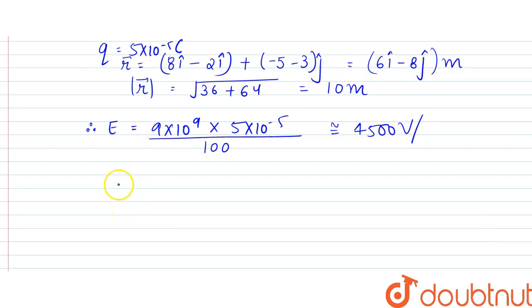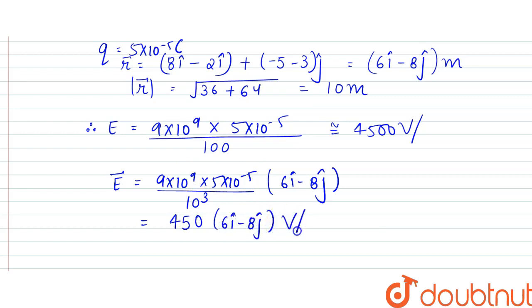But this is the magnitude. The vector, it would be 9 into 10 to the power 9 into 5 into 10 to the power minus 5 by r cubed, that is 10 to the power 3 into 6i minus 8j. So that would turn out to be equal to 450 into 6i minus 8j volt per meter.